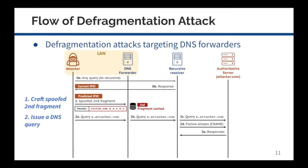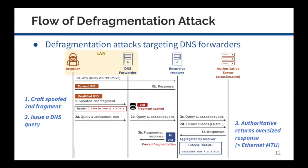The attacker then issues a DNS query of the controlled domain name. The DNS forwarder passes the DNS query to its upstream, and the recursive resolver will follow the aliases and fetch the entire CNAME chain from the authoritative server. The oversized DNS response is then aggregated by the upstream recursive resolver and sent back to the DNS forwarder. Because the response is larger than the Ethernet MTU, it should always be fragmented on its way back.